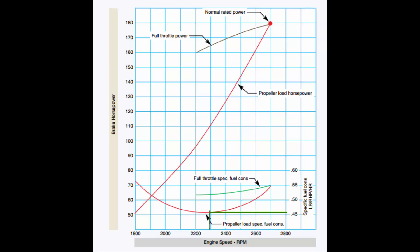So what this curve is telling us is that we're going to burn half a pound per hour for each engine horsepower.